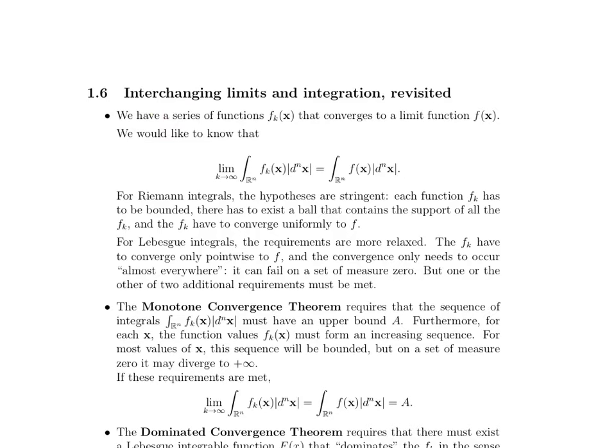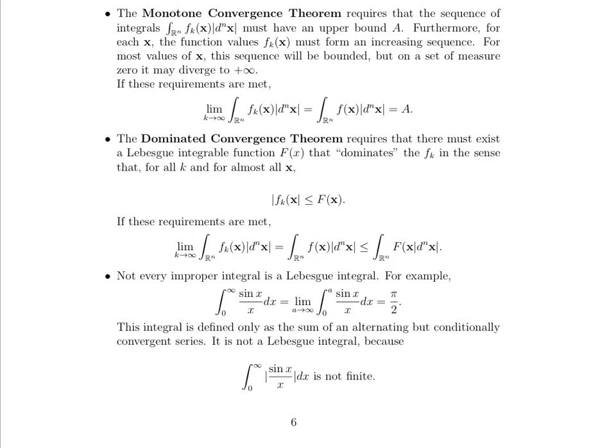Let's introduce two major theorems that you'll be applying in this particular unit and how they work. First, there's the monotone convergence theorem. Now the monotone convergence theorem requires a few things. One is that if you take a look at the sequence of integrals of the f sub k's, that sequence has to have an upper bound, we're going to call it A. And in addition to that, for each x, if you took a look at the sequence of function values, the f sub k's of x, you know, f1 of x for this particular x, f2 of x for this particular x, f3 of x for this particular x, it should form an increasing sequence. That has to happen. So for most values of x, this sequence will be bounded, but on a set of measure zero it may diverge to positive infinity.